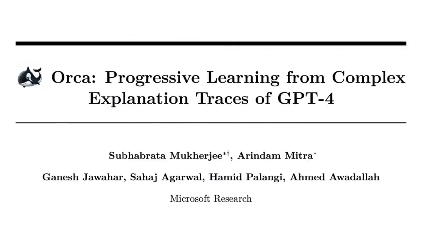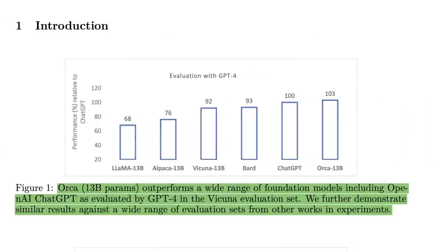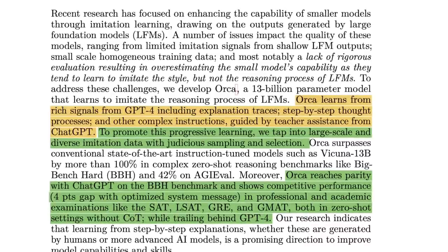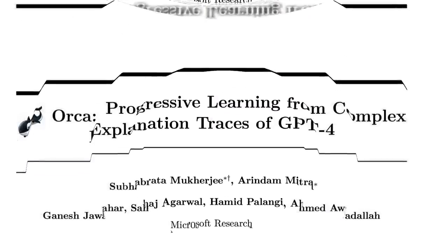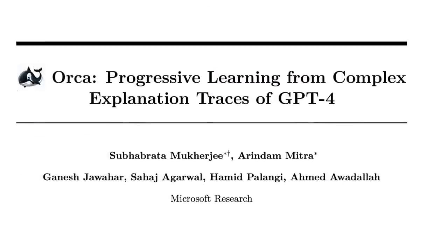A few days ago, there was this very interesting paper called ORCA: Progressive Learning from Complex Explanation Traces of GPT-4, and there was a lot of excitement around it. In the paper, they presented a student-teacher learning approach along with a new dataset creation approach, and showed that this model can outperform ChatGPT and get closer to GPT-4 on certain tasks. Although very promising, neither the model nor the dataset was released.